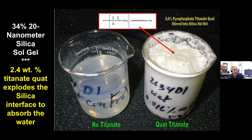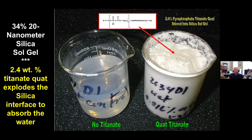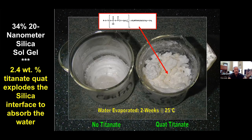Here's a demonstration of what we call exfoliation. The left-hand jar is a commercially available 34% 20-nanometer nanosilica sol-gel — this is the way you buy nanosilica. What happens when you stir in 2.4% titanate — a number we got by trial and error? As you add the titanate quad into this silica sol-gel, you explode so much silica interface that it absorbs all the water. The water disappears. If you take those two jars and leave them on a bench for two weeks, the left side shows the water disappearing and silica re-agglomerating. On the right, the titanate keeps the nanosilica from agglomerating — and you're going to see the same thing in graphene.